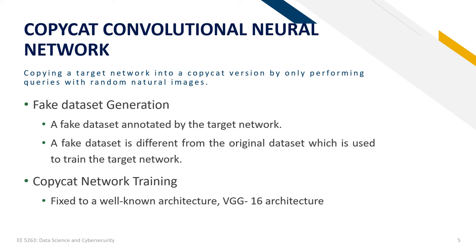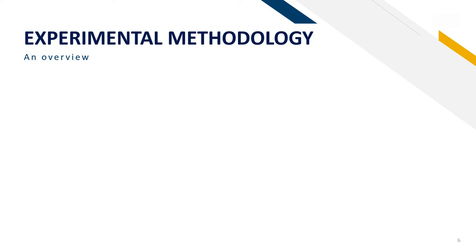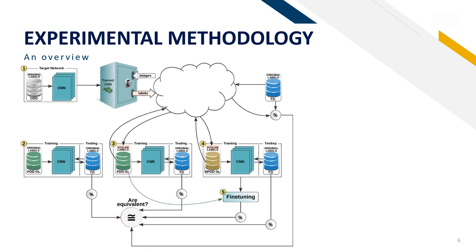In the performance experiments, the same VGG16 architecture was used for both the target and copycat networks. The experimental methodology presents the process of creating a copycat from a target black-box CNN. The proposed method is compared to two baselines using a test dataset, while considering three types of copycat networks. Each of the three copycat networks are evaluated across three different real-world problem types.